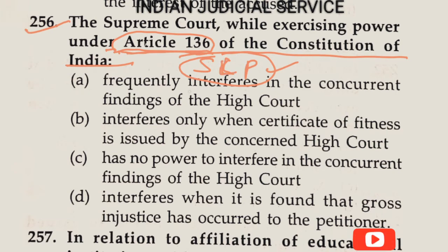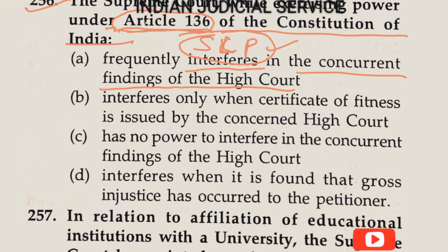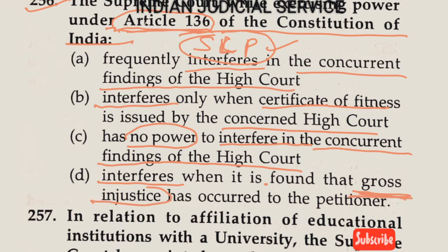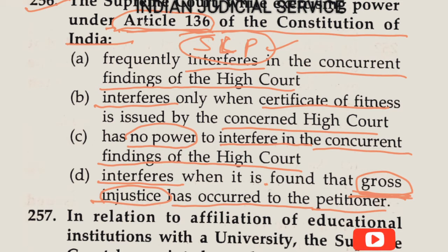Option A: Frequently interferes in the concurrent finding of the High Court. Option B: Interferes only when the certificate of fitness is issued by the concerned High Court. Option C: Has no power to interfere in the concurrent finding of the High Court. Option D: Interferes when it found that gross injustice has occurred to the petitioner. The answer is clearly Option D.